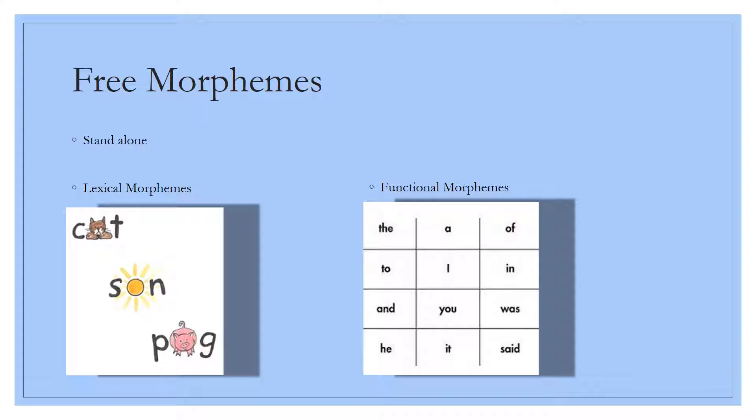The first category are free morphemes, and these are the types of morphemes that are the smallest units of meaning while also being complete words by themselves. They can completely stand alone and be grammatically okay. Free morphemes can also be divided into categories known as lexical and functional morphemes. Lexical morphemes carry content and are made up of nouns, adjectives, verbs, and adverbs.